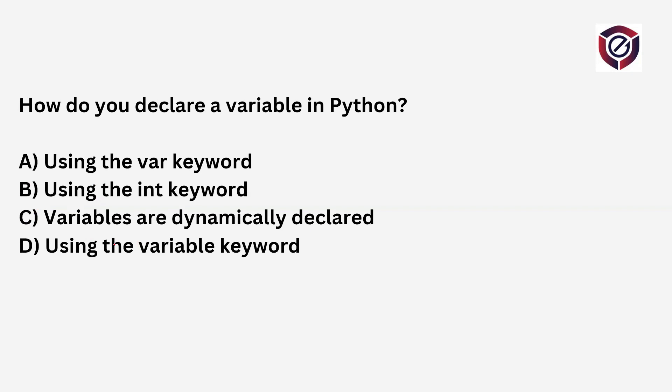How do you declare a variable in Python? The options are: using the var keyword, int keyword, dynamically declared, or using the variable keyword. Remember, in Python there is no particular keyword needed such as int, float, or double. Variables are declared dynamically in Python. The correct option is C — variables are dynamically declared, and no keywords like var, int, or variable are required.